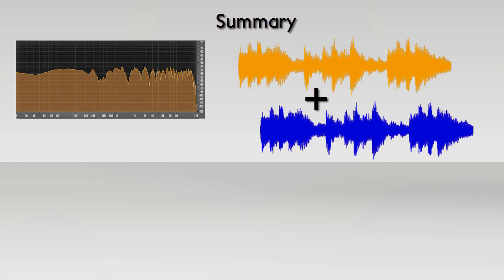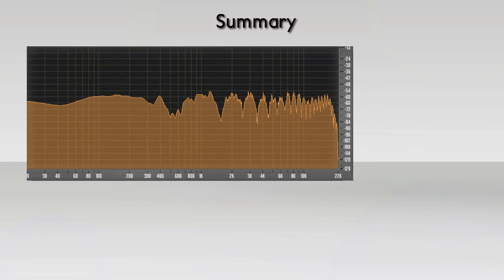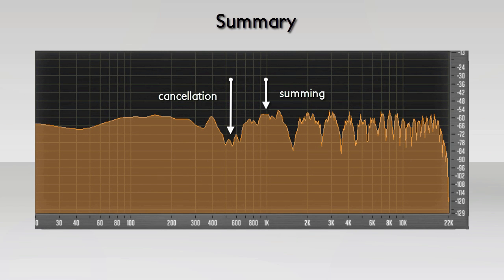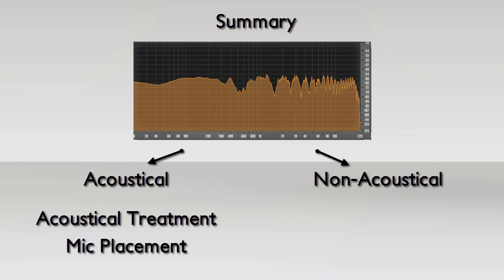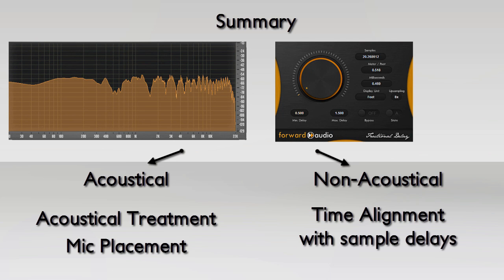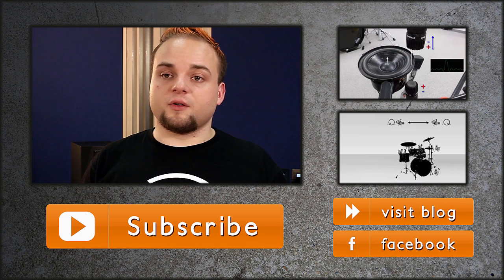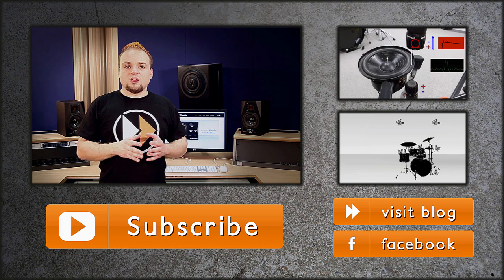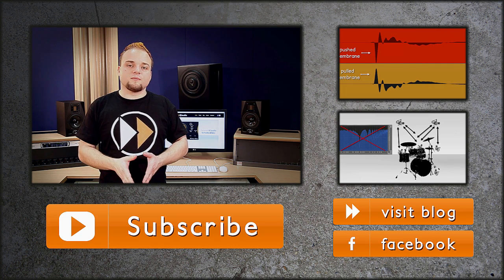Let's summarize. Comb filters are created when copies of a source signal with a time variation are mixed together. This can occur non-acoustically by electrical or digital summing of audio signals, or acoustically by reflection of sound waves. Both result in a frequency-dependent cancellation or summing of the original. Acoustical comb filters can be minimized by acoustical treatment and taking care of mic placement. Non-acoustical ones can be time aligned with audio plugins like FA Fractional Delay or FA Sample Delay. One solution not covered in this video is the use of the so-called phase switch, which will be covered in another video. Feel free to make a comment below if you have more questions. Thanks for watching.